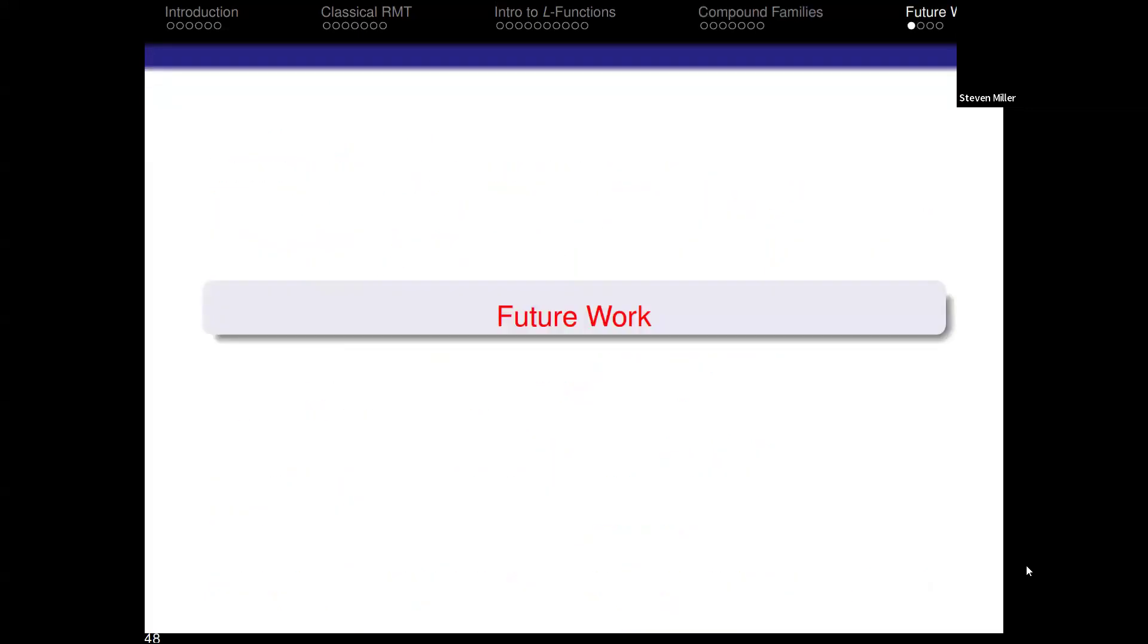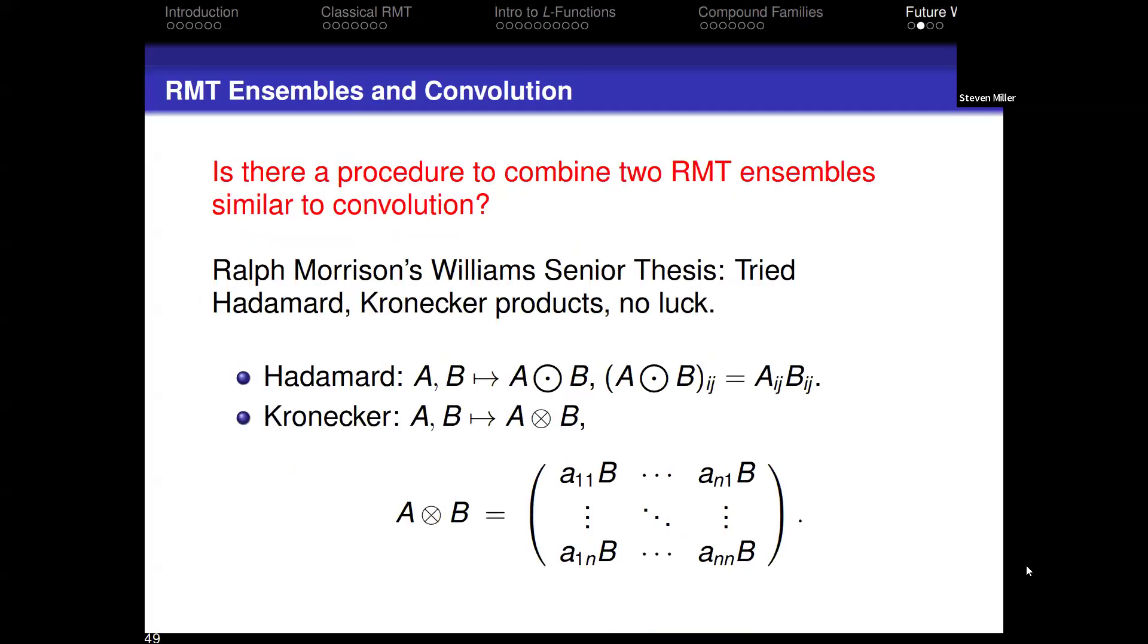The future work, and this is the part with the last minute and a half that I want you to help me with: is there a random matrix theory analog of the convolution of L-functions or is convolution fundamentally a number theory operation with no corresponding operation in random matrix theory? I mentioned I had a really smart Williams thesis student many years ago and I warned him, this is a tough problem. Don't worry if you can't do it. I have faith in you and we can shift to something else halfway through the year. We shifted. We tried lots of different things. We tried the Hadamard product where you just multiply point-wise. We tried the Kronecker product where if you give me two matrices A and B, I form the new matrix A ⊗ B where it's A_1,1 B and so on. We can write down formulas for what are the eigenvalue distributions of these combined families in terms of the constituents, but it doesn't model what we're seeing with the convolution. What I'm hoping is somebody might be able to find an operation that would be similar to that.